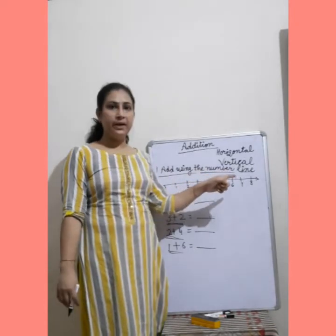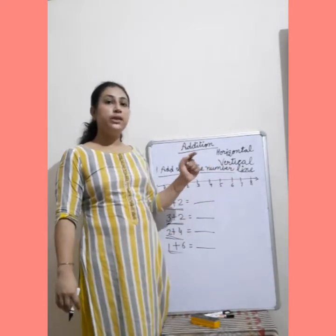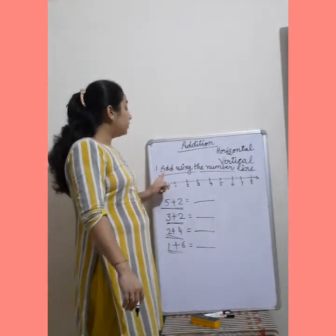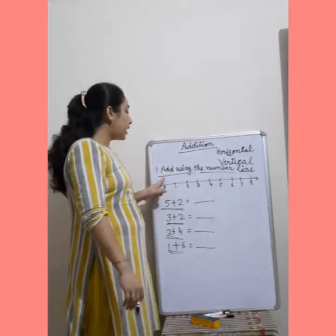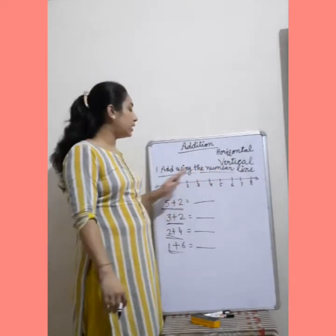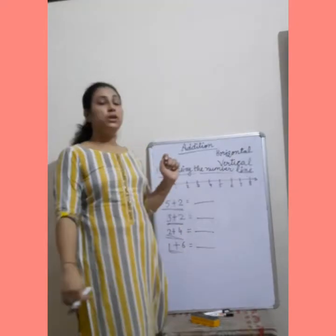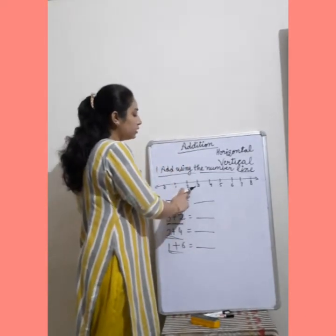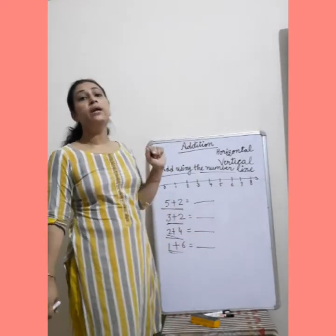Firstly, number line method. And second method भी बताएंगे. Firstly, we will do addition with number line. Add using the number line. Number line का यह क्या है — number line है. इसका use करते हुए आपने add करना है. 0, 1, 2, 3, 4, 5, 6, 7, 8 — यह क्या है आपकी number line.